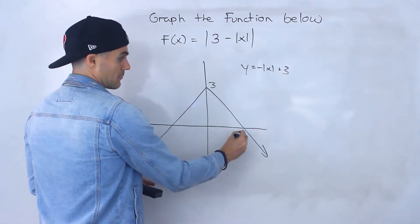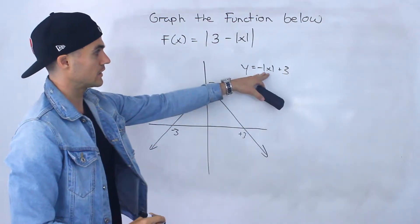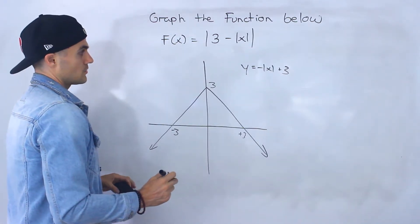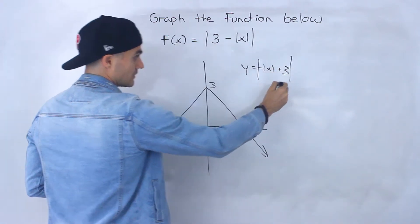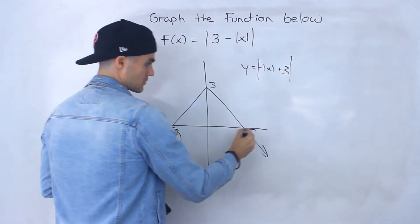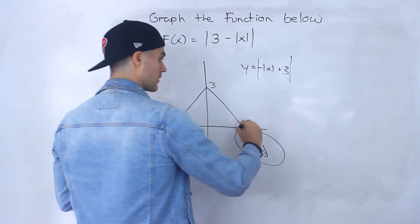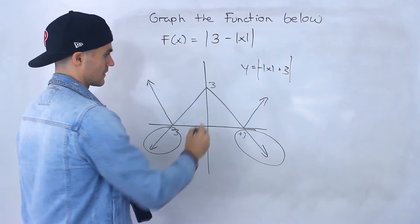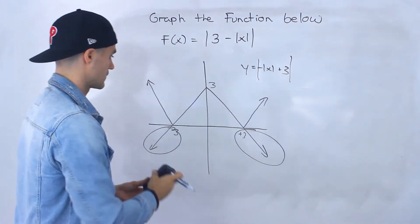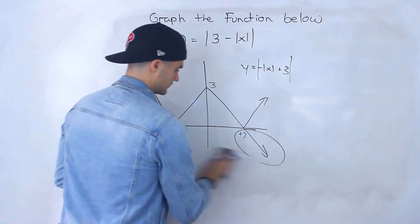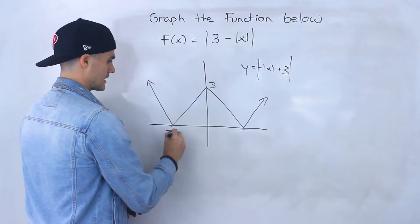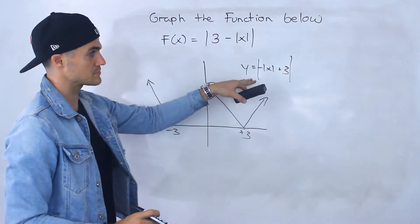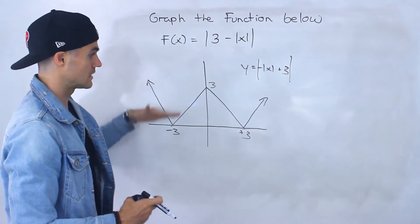The vertex is at y equals 3. Notice positive and negative 3: if we plug those in for the absolute value of x, they make the y value 0, meaning those are the x-intercepts. Now when we take the absolute value of that whole expression, all we're doing is taking any negative y values — these areas here — and reflecting them, making them positive. So those parts get reflected up, and the middle part stays as is because it's already positive. After erasing the reflected portion, we have the final graph with the vertex still at negative 3 and positive 3.